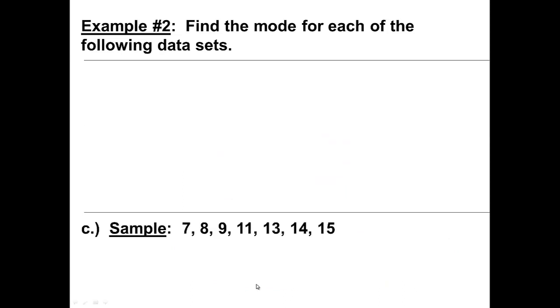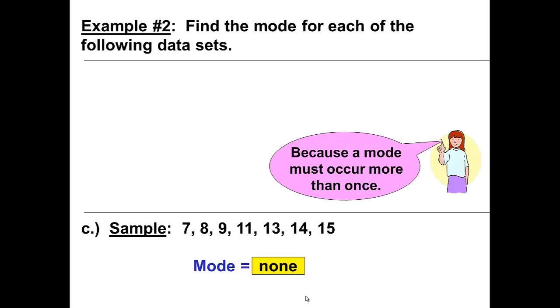Look at our last sample. It consists of seven, eight, nine, eleven, thirteen, fourteen, and fifteen. The mode is none. Why? Because a mode must occur more than once. None of our data occurs more than once.